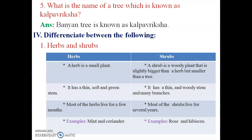Once again — A herb is a small plant. A shrub is a woody plant, slightly bigger than a herb but smaller than a tree. Herbs have thin, soft and green stems and live for a few months. Shrubs have thin, woody stems with many branches and live for several years. Examples — herbs: mint and coriander; shrubs: rose and hibiscus.